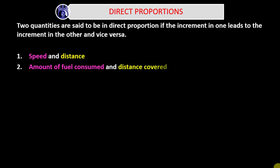Number two: amount of fuel consumed and distance covered. The more fuel you consume when driving or riding a motorbike, the more distance you cover. So as fuel consumption increases, more distance is also covered. Number three: amount of work and number of laborers. As you increase the number of laborers, the amount of work also increases.